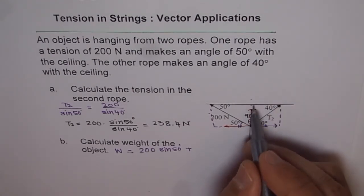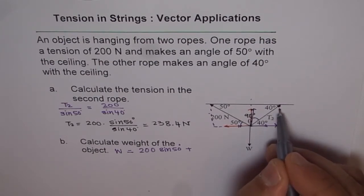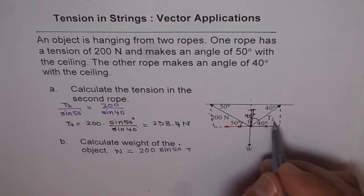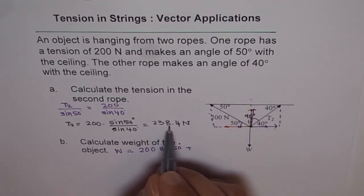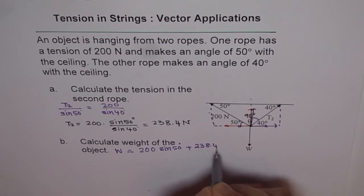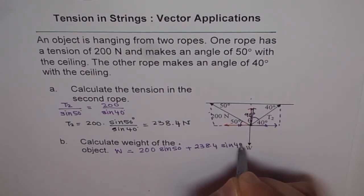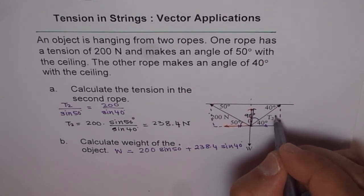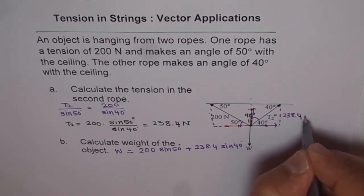Let me make a right triangle here also. The vertical component for T2 will be this vertical component which is sine of 40. T2 is 238.4, so 238.4 times sine of 40 degrees. T2, we calculated is equal to 238.4 N.